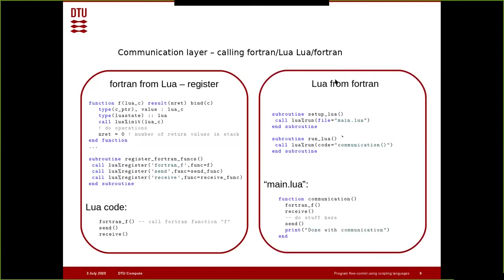Calling Lua from Fortran is equally easy. You call 'lua_run' and this will call a file. A good idea is to only have a function in your main Lua script, because you don't want to populate the Lua interpreter with the same file all the time. You run it once, populate a function that you need to call from your hosting program — in this case, the communication function — and you just call it whenever you need it.